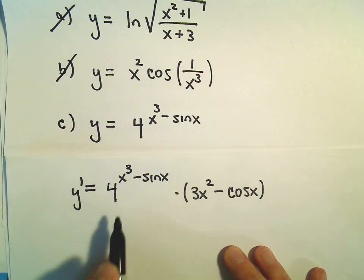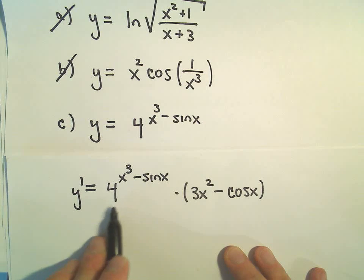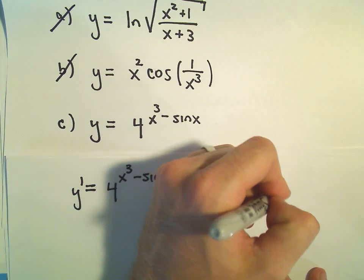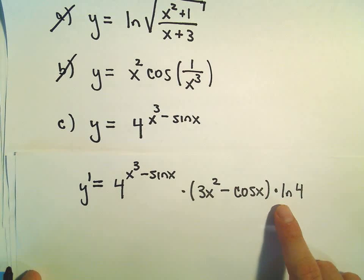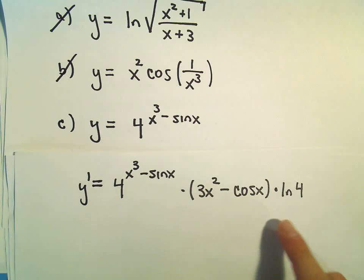And last but not least, recall, when we have a number, a base other than e, we have to multiply that by the natural logarithm of the base. Again, we even do it when we have base e. It's just that ln(e) equals 1. So we don't bother to write it.